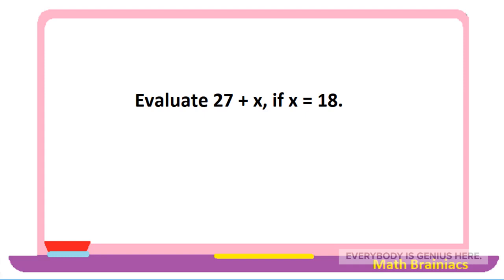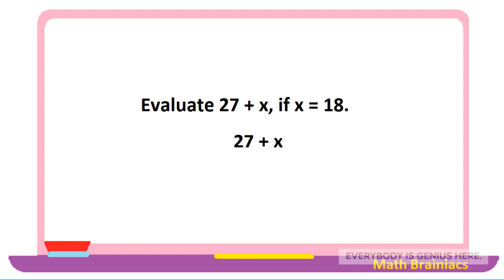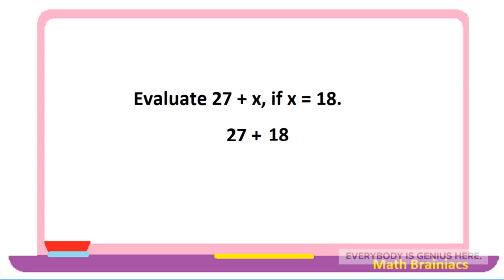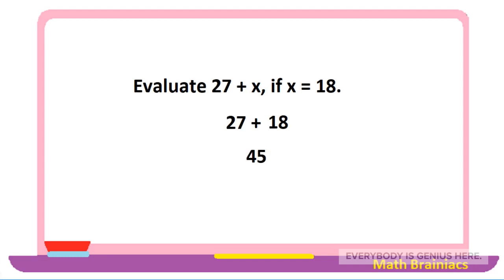Let us write the equation 27 plus x below. We know that x is equal to 18, so we are just going to substitute the value of x in the equation, and it will give us 27 plus 18, which is equal to 45. Accordingly, 27 plus x is equal to 45 if x is equal to 18.